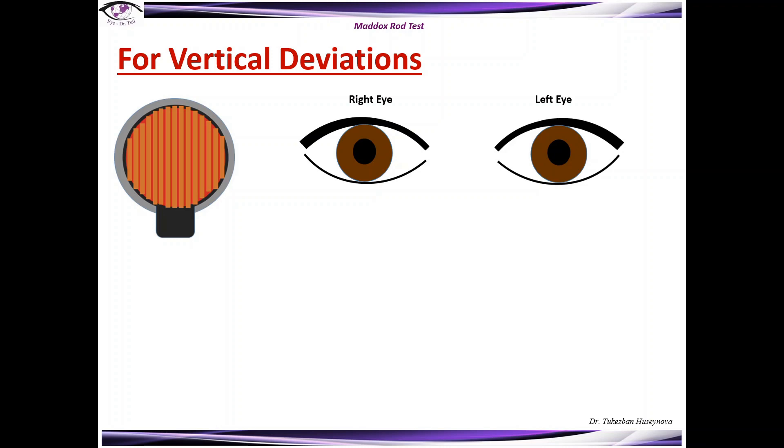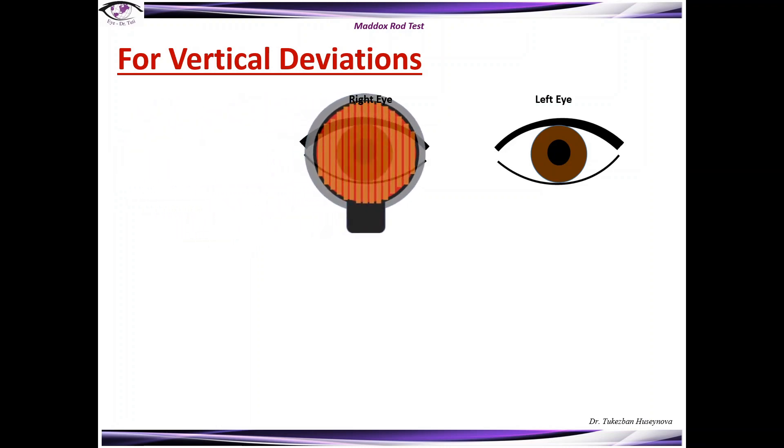For vertical deviations we put again the red glass the way that those cylinders are directed vertically and the patient sees a horizontal line. When the light is in the middle of this line this is again orthophoria.